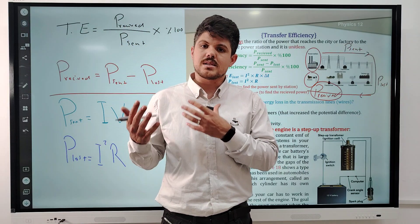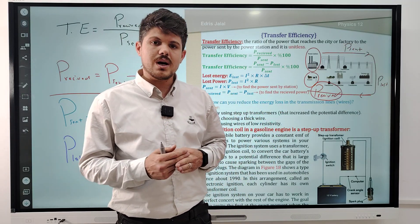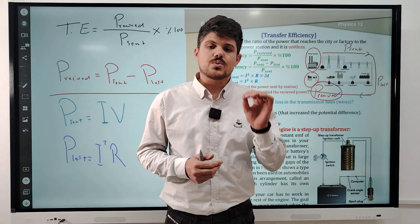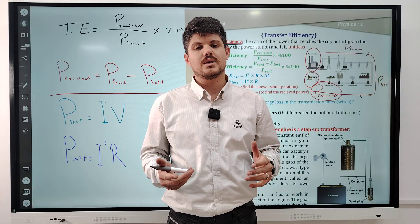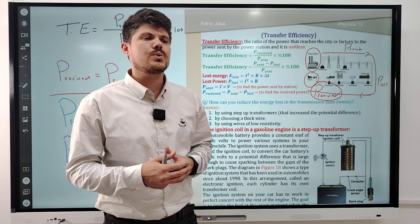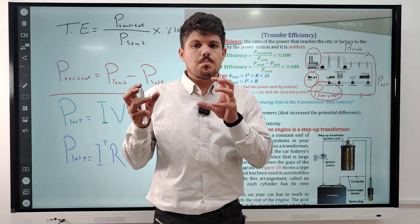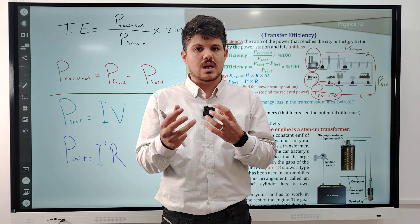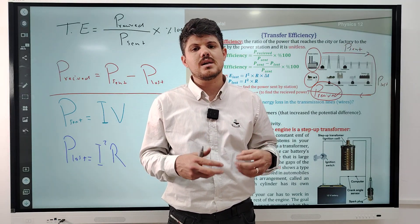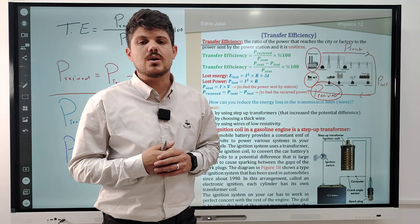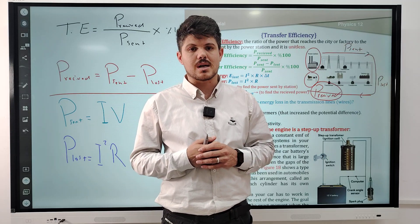The thick wire has less resistance and the thin wire has more resistance. The third factor is the type of material. For example, with the same cross-section area and same length but different material, iron versus copper — the copper has less resistance, but the iron wire has more resistance.